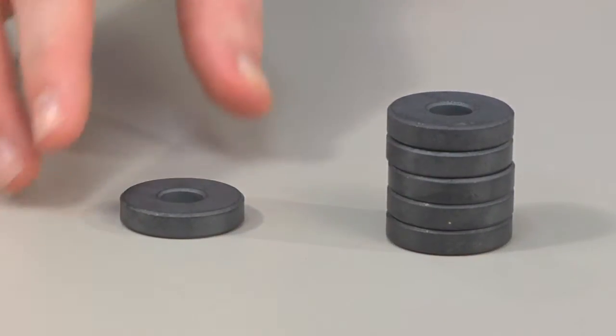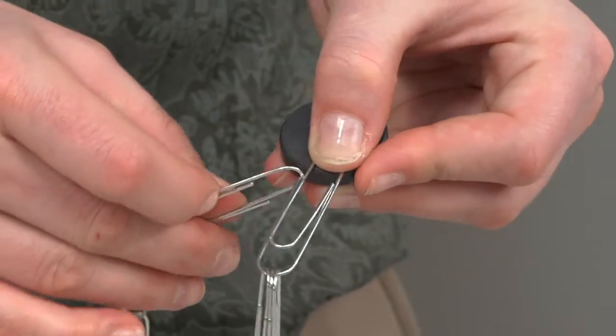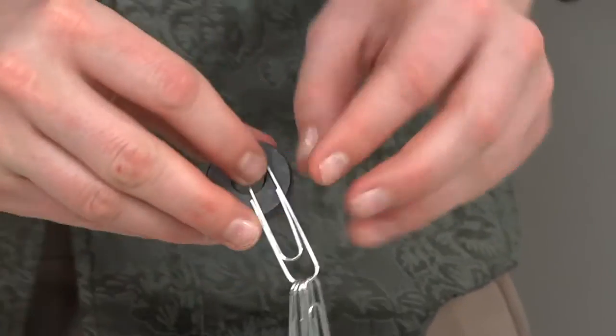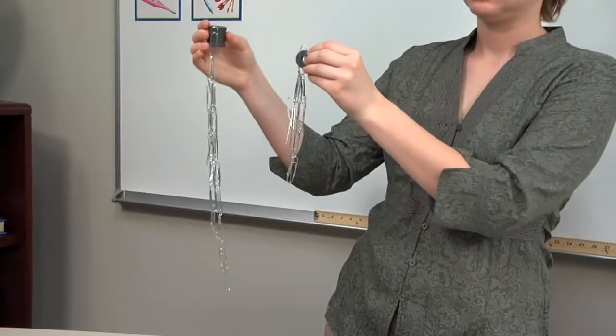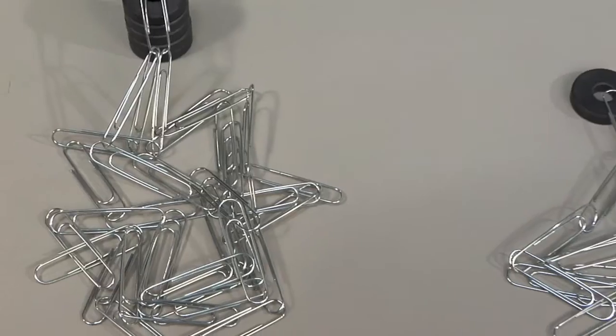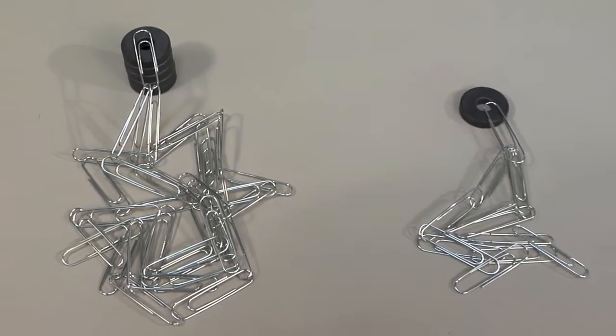First using a single ring hanging from a single point, attach as many paper clips as possible while suspending the magnet to determine the strength of its magnetic pull. Repeat using five rings in total. Record the number of paper clips from each test in the student journal.